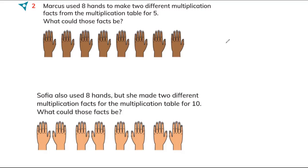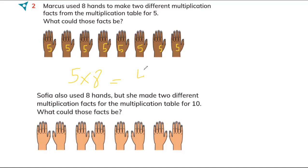You can write multiplication fact: one, two, three, four, five, six, seven, eight. Each hand has five fingers. Five fingers and how many hands? Eight. So when you count table five — five, ten, fifteen, twenty, twenty-five, thirty, thirty-five, forty. So there are 40 fingers.